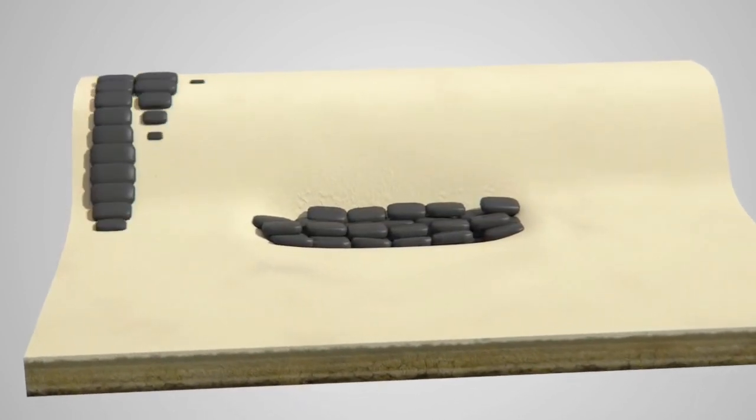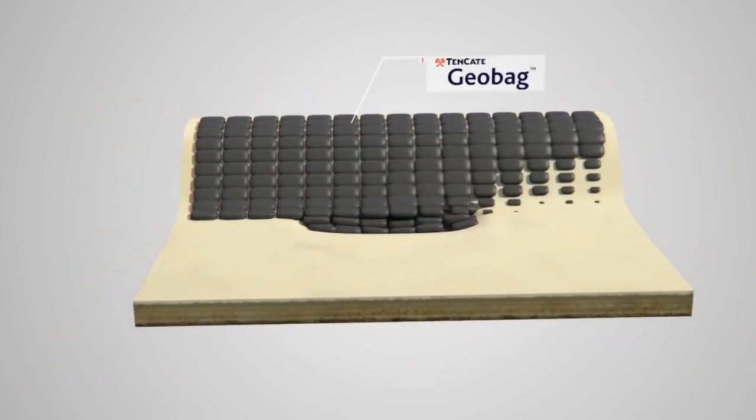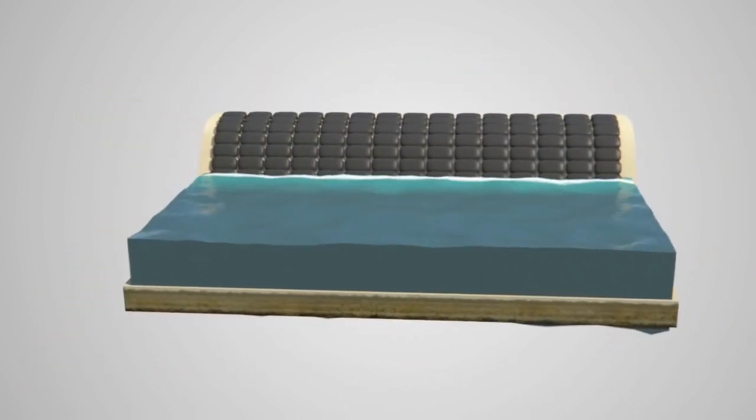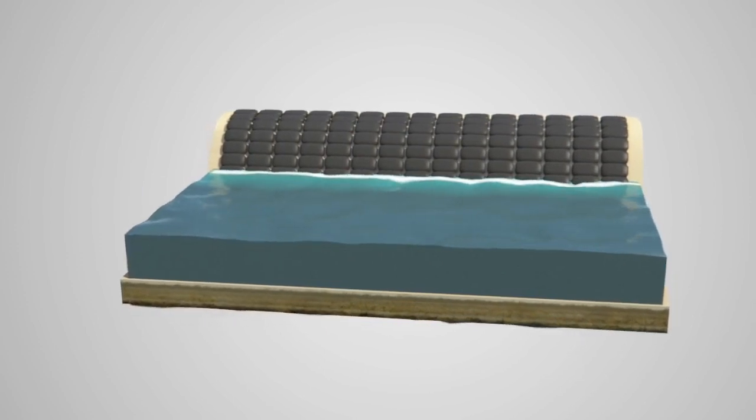Tenkata Geobag units, applied to create dams, dikes, and fill scour holes, provide an effective erosion control measure due to their strength and durability.